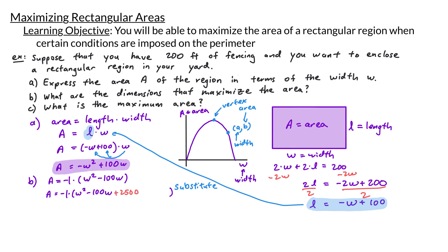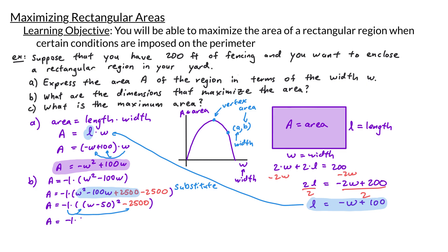To complete the square, take the coefficient negative 100, divide by 2 to get negative 50, and square it to get 2500. We add 2500 inside the parentheses, but to balance the equation we also subtract 2500. This lets us factor the blue part as a perfect square. The factored form is A equals negative 1 times W minus 50 squared, minus 2500. Distributing the negative 1 gives A equals negative 1 times W minus 50 squared plus 2500.